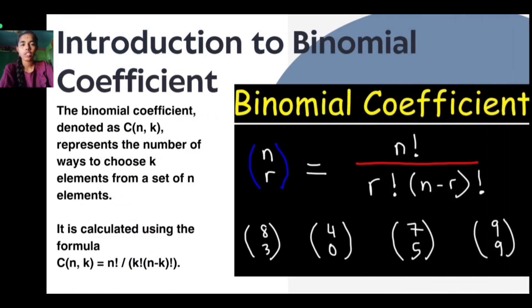Introduction to binomial coefficients. The binomial coefficient, denoted as C(n,k), represents the number of ways to choose k elements from a set of n elements.